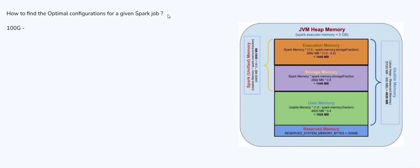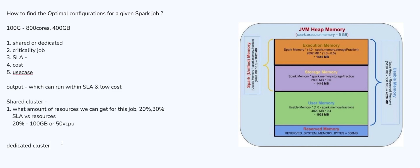So for 100 GB of data, we were able to find out to use 800 cores and 400 GB of memory. So these configurations we were able to find to process the 100 GB of the data on a dedicated cluster.